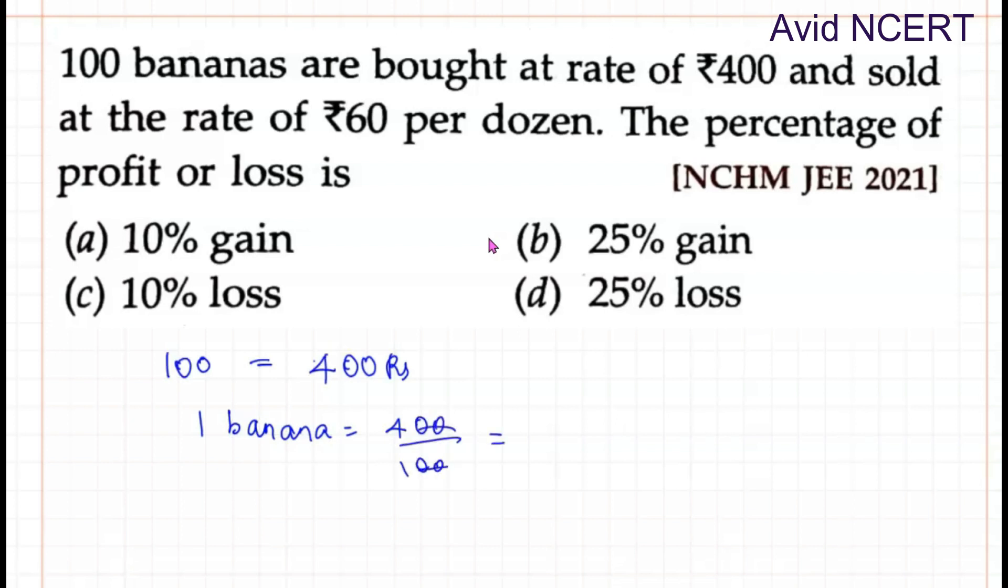They are sold at the rate of 60 per dozen, so one dozen equals 60 rupees. One dozen has 12 bananas, which equals 60 rupees. So one banana will be equals to 60 divided by 12, which equals 5 rupees.